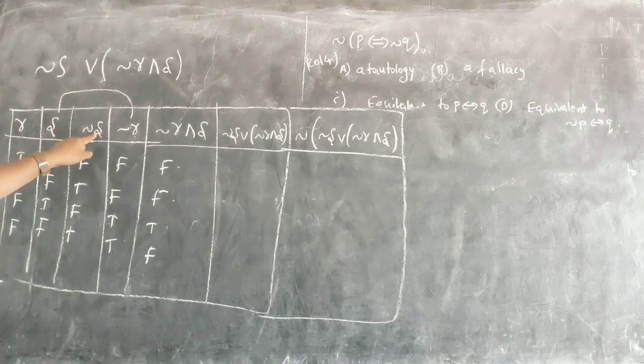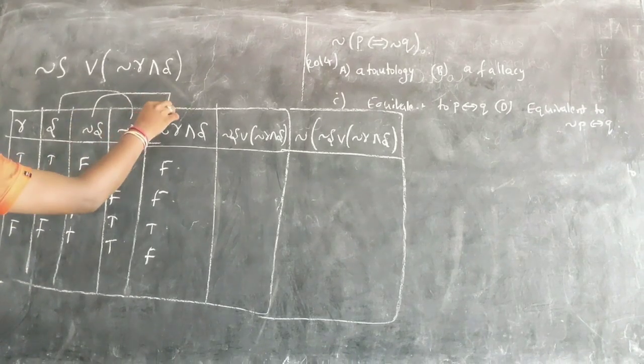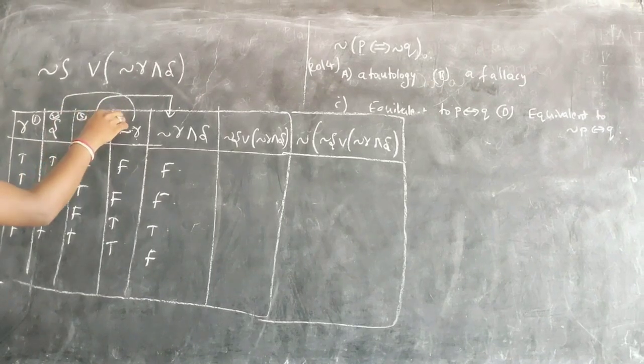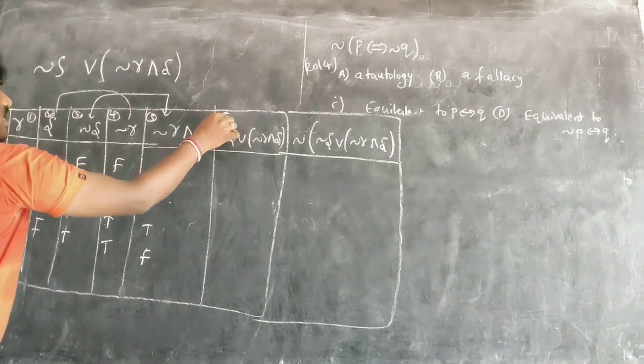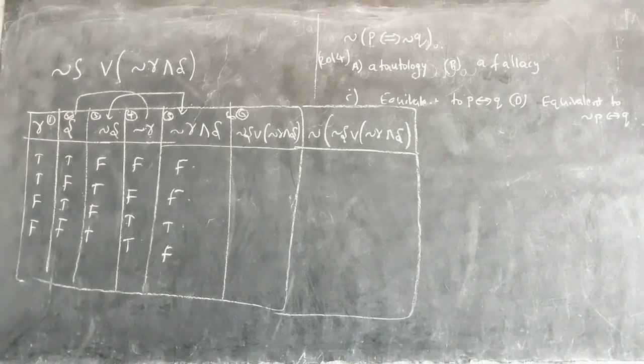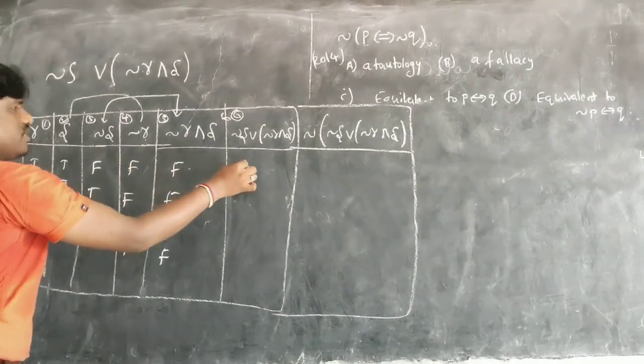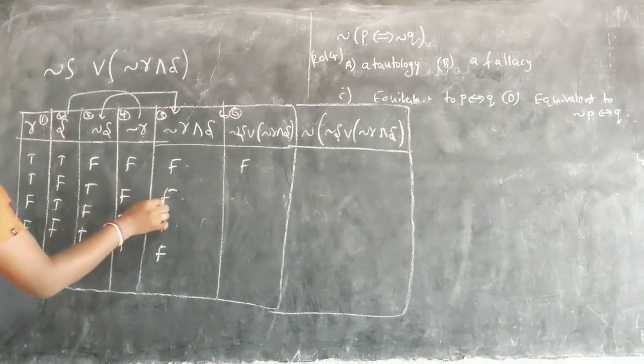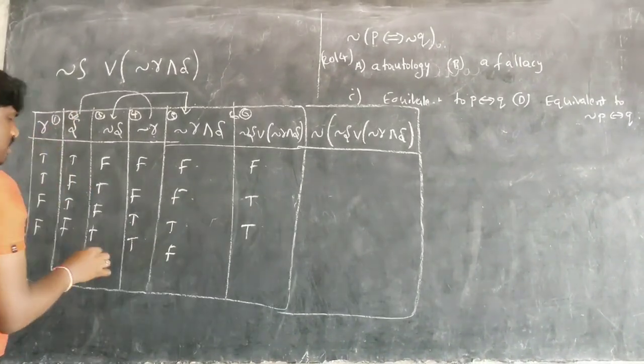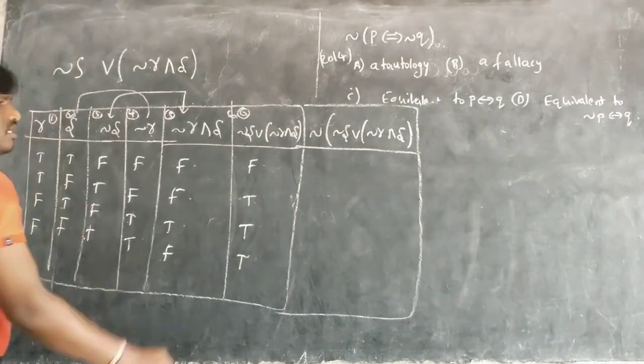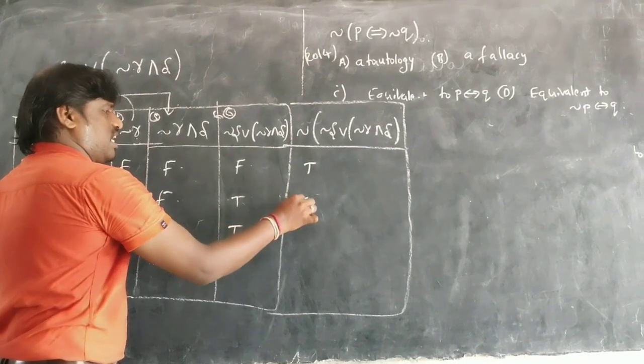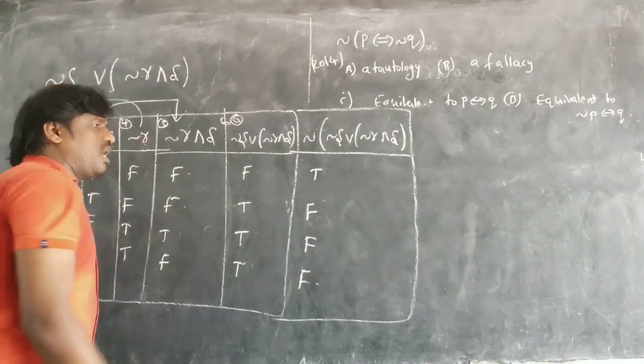Now what I have to do here, I have to do negation S with this one, OR condition. So that is column number 1, 2, 3, 4, 5, 6. If I take, I have to do 3 and 5 OR condition. F OR F is F. So here F F is F, T F is T, F T is T, T F is T. And negation of this one will be what? T F F F.